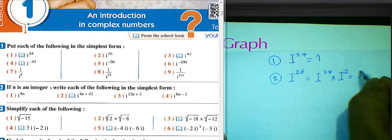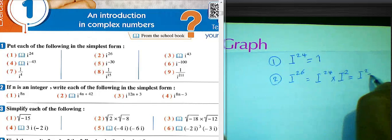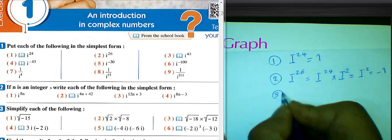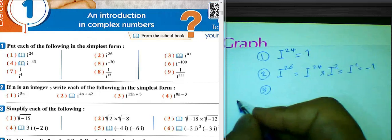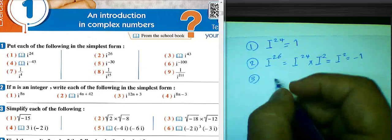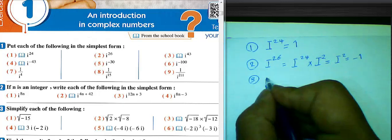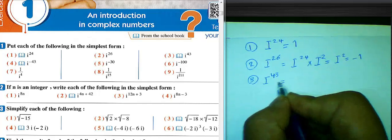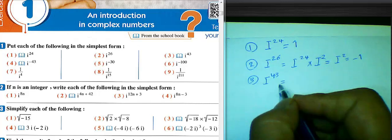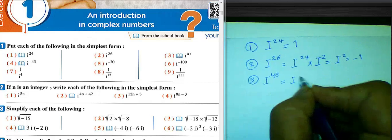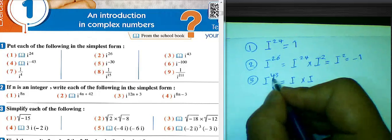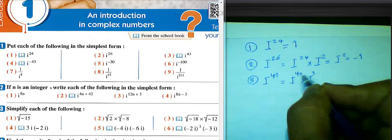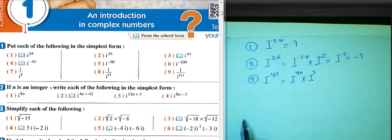So 1 times i^2 equals i^2, and i^2 equals negative 1. The result is negative 1. Question 3: i^43 equals i^40 times i^3.